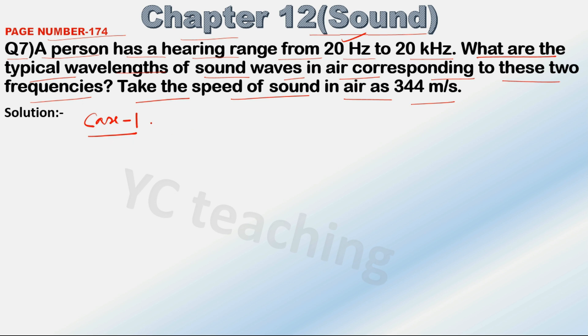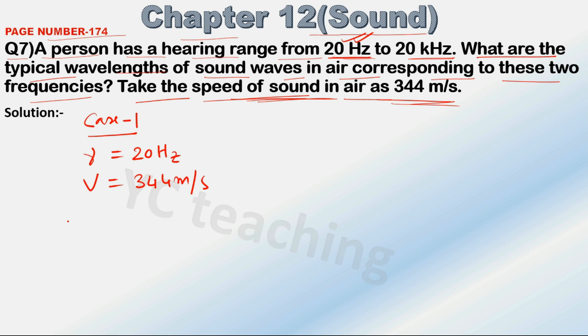Case 1 for the first frequency. We have two frequencies given, so case 1 is for the first frequency and case 2 for the second frequency. The given frequency, nu, is equal to 20 Hz. And speed of sound, v, is equal to 344 meters per second.